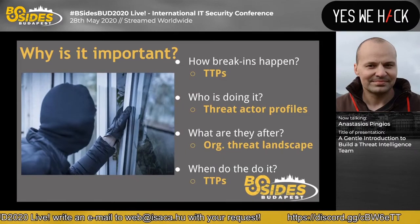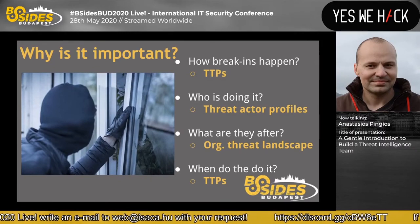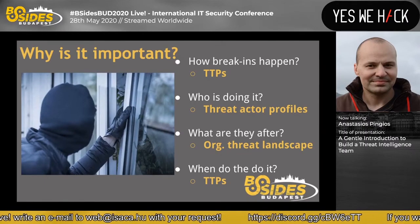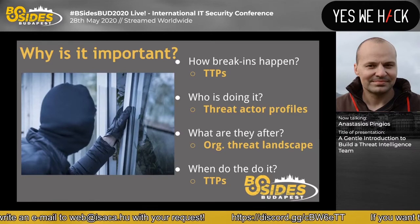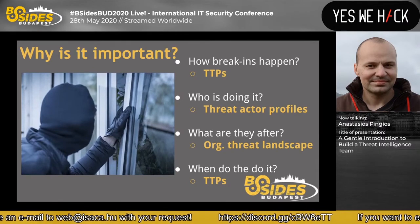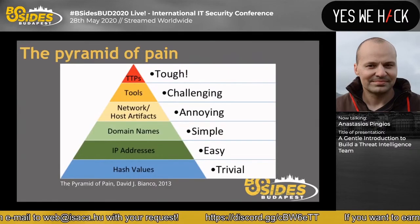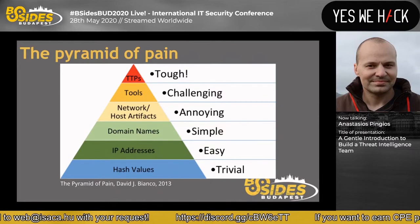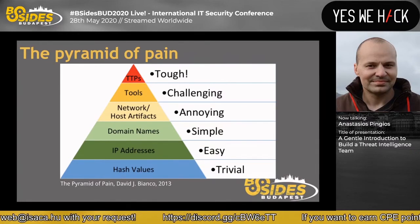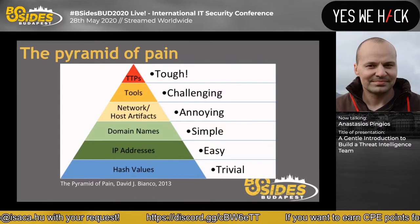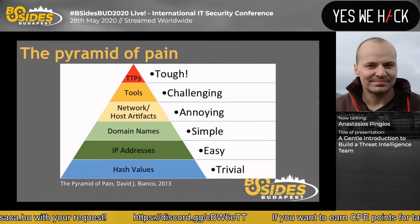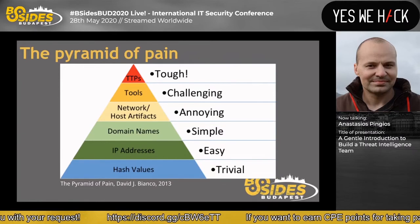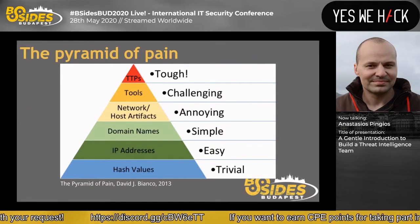Going back to the home break-in analogy: 'how did break-ins happen?' maps to tactics, techniques, and procedures — TTPs. 'Who is doing it?' maps to a threat actor profile. 'Why?' maps to a threat landscape for your industry. When it comes to TTPs, a useful resource is the Pyramid of Pain. On one side you see how difficult it is for an attacker to overcome your detection. Giving teams hash values to detect is trivial for an attacker to change. As you go up the pyramid it becomes harder. If you manage to identify how a threat actor behaves — their TTPs, the sequence of phishing, then lateral movement, then specific tooling — you can make it very tough for them to evade your defenses.